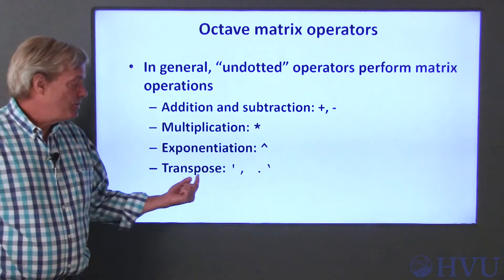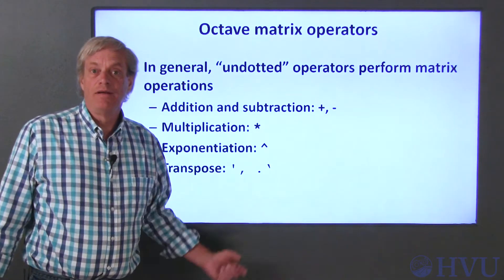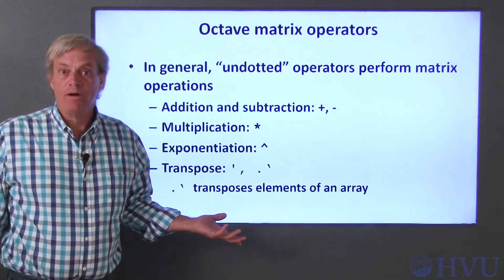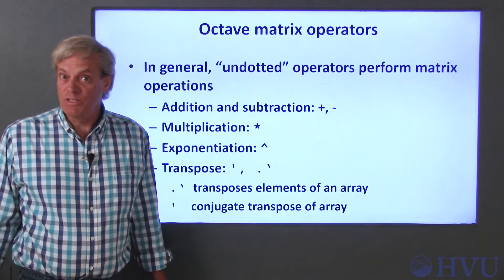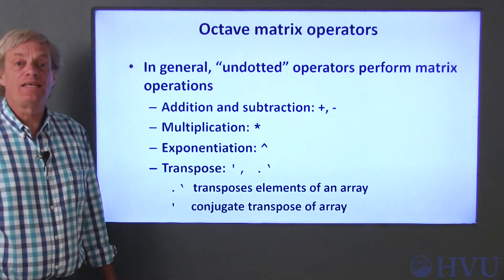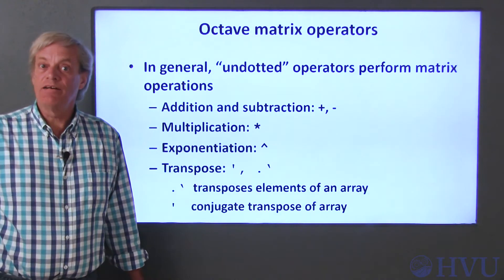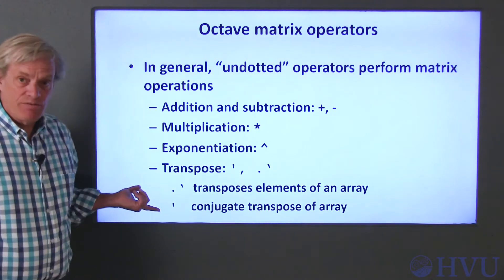To transpose matrices, you can use either a single quote or a single quote with a dot in front of it. Dot quote transposes the elements of an array. Quote with no dot also transposes the elements of the array, but it also takes the complex conjugate of the array, which changes the sign of any imaginary parts of the numbers.